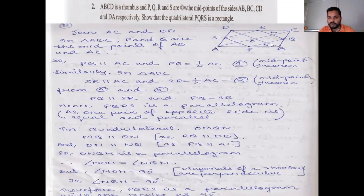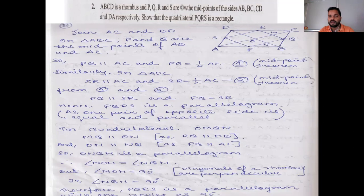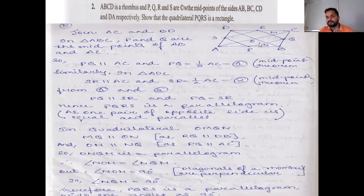Draw diagonals BD and AC. The intersection points are named M, O, and N. Since ABCD is a rhombus, its diagonals bisect each other at right angles, so angle MON equals 90 degrees. In triangle ABC, PQ is parallel to AC and PQ equals half of AC. Similarly in triangle ADC, SR is parallel to AC and SR equals half of AC. From these, PQ is parallel to SR and PQ equals SR, so one pair of opposite sides is equal and parallel — PQRS is a parallelogram.